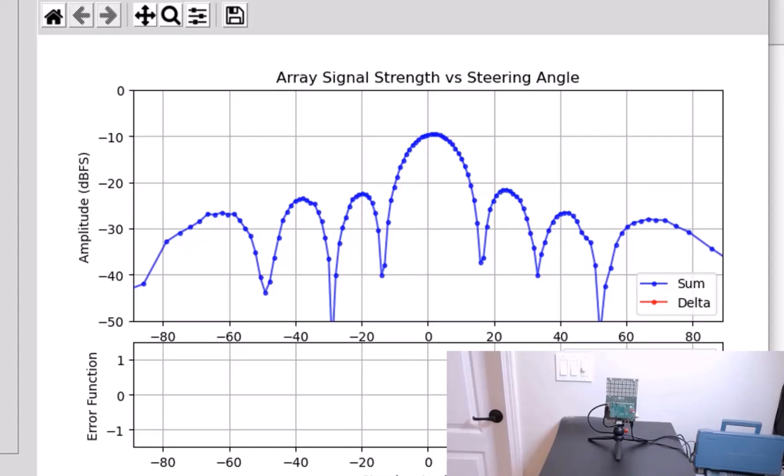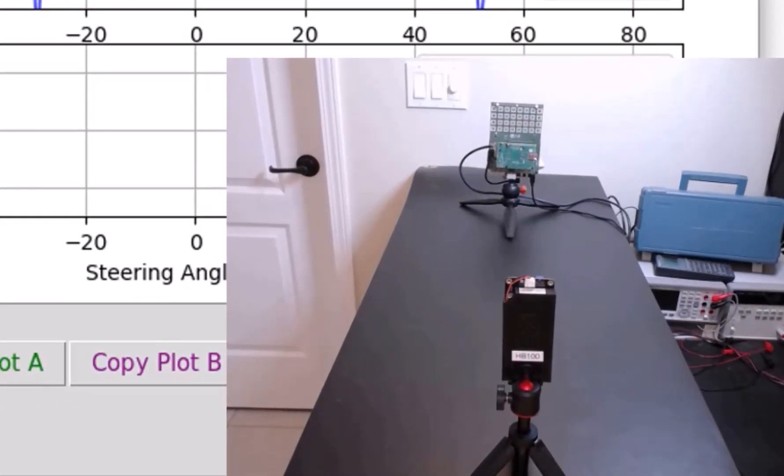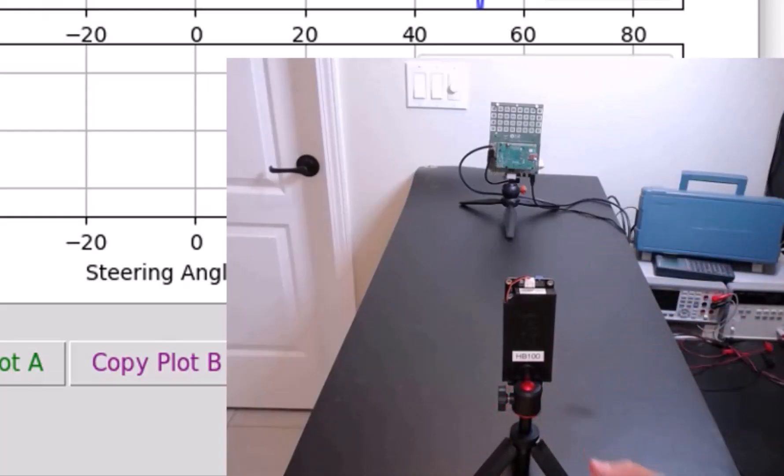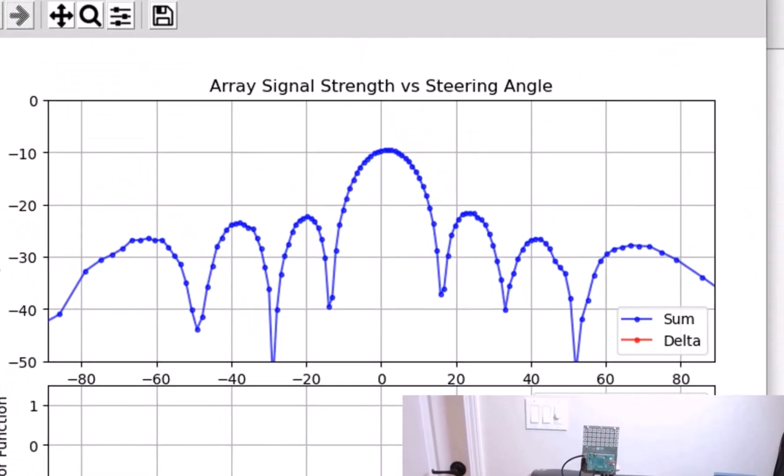But let's actually make some measurements and see if they truly match with what we calculated. So to do this, we'll move the HB100 directly in front of the array. Again, that's called the broadside or the mechanical boresight position. So we just want to make sure that that's squared up. And the reason we do that is because that's where these simplified equations are going to be the most accurate.